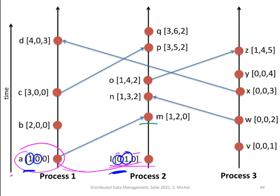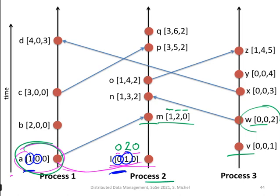When process 2 receives the message from process 1, it increments its own counter to 2, then merges the vectors by taking the element-wise maximum, yielding [1, 2, 0]. The procedure continues: after further events and sending, the vector is shipped to process 2, which increments its counter to 3 and merges, producing the final clock. By examining these clocks you can tell which are concurrent and which are in a descendant relationship.